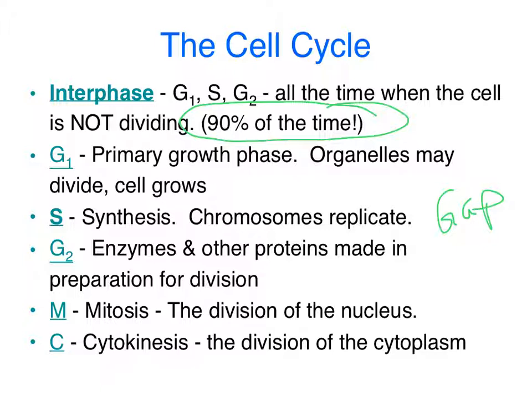Eventually some chemical, a protein, will trigger the cell to let it know it's getting ready to divide. Perhaps the cell is getting too big, maybe it's a skin cell and there was a cut and it's got to kick into production of new cells — whatever the case may be. At that point the cell will move into the S phase, also known as synthesis.